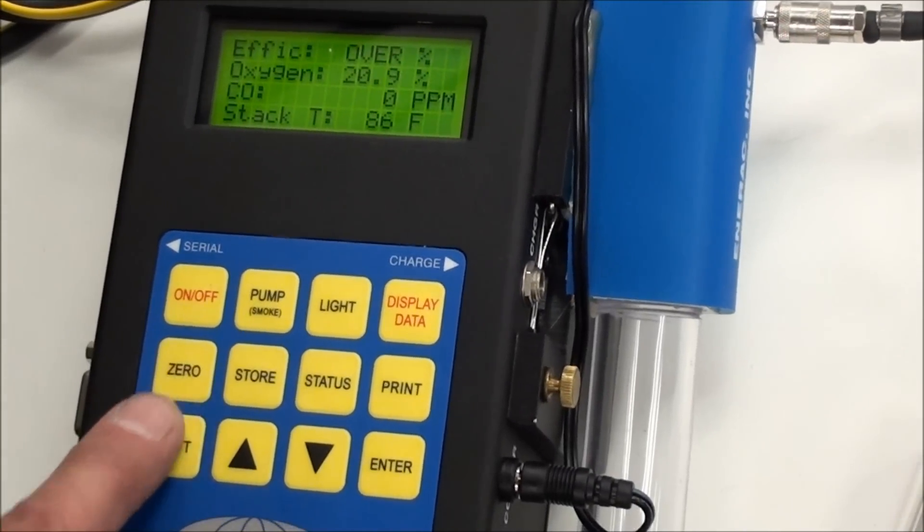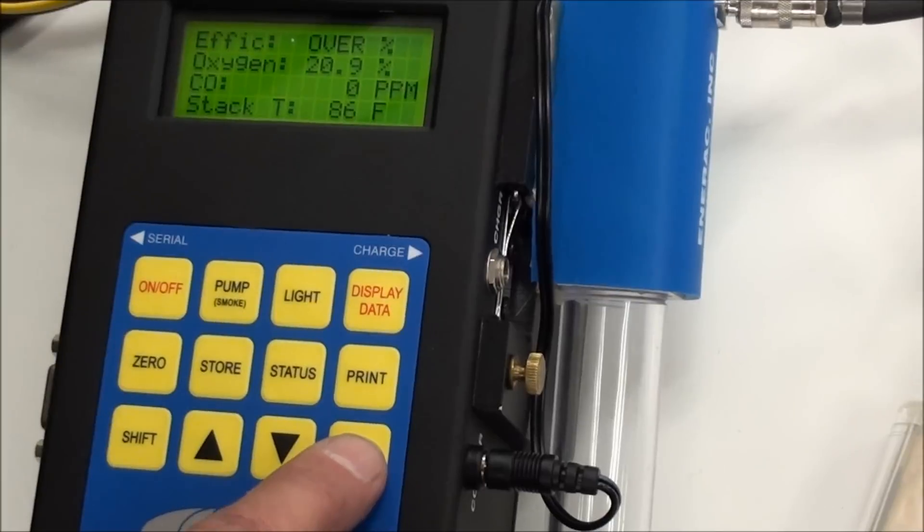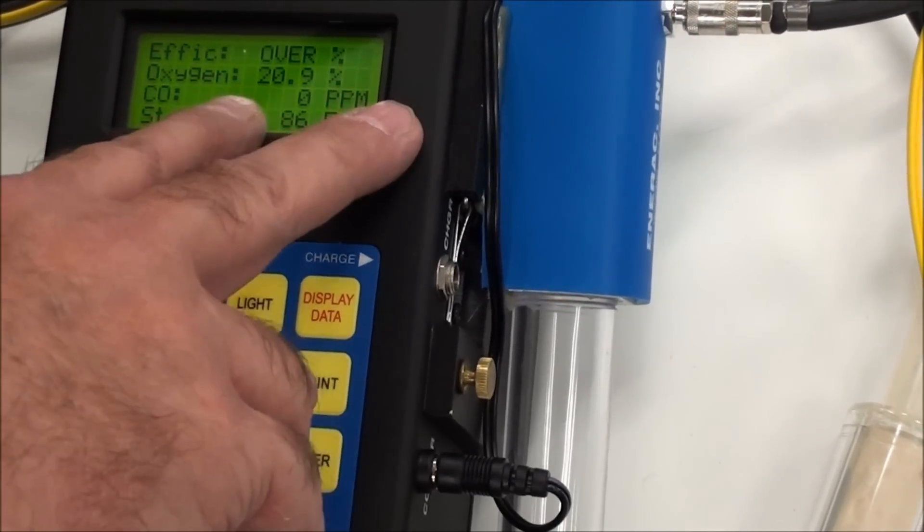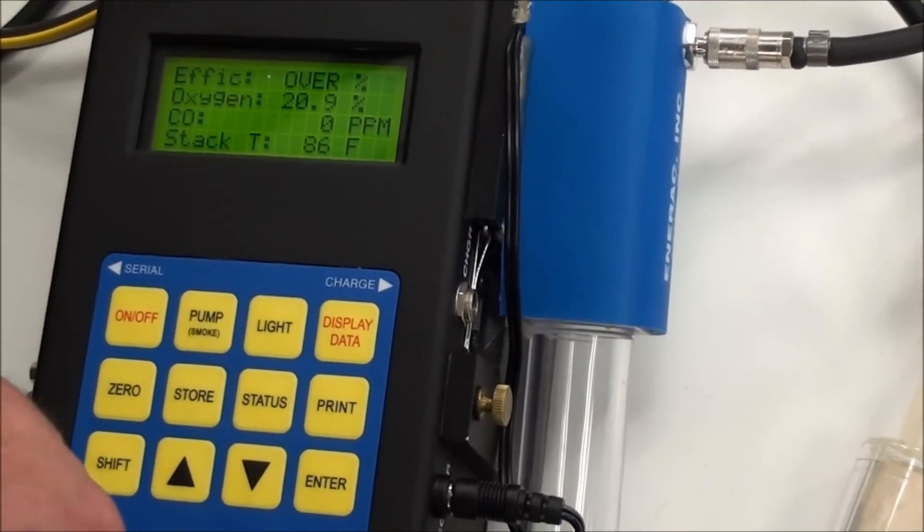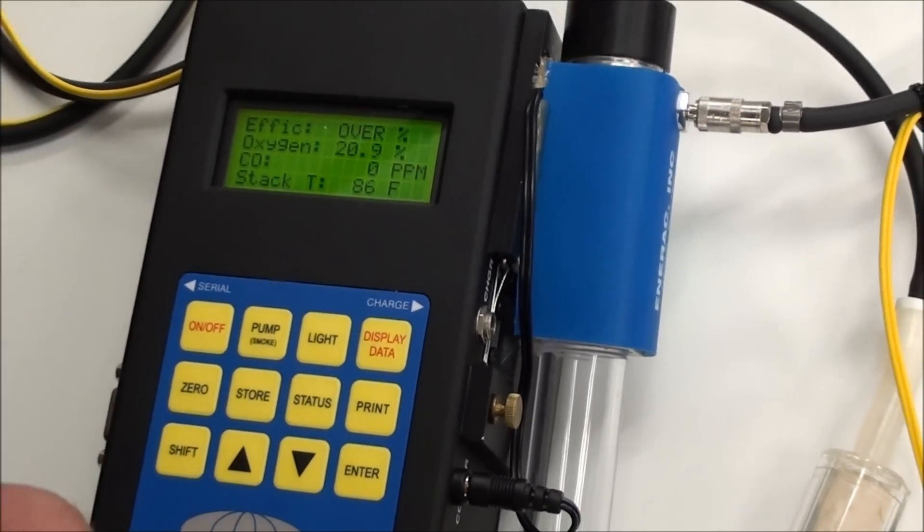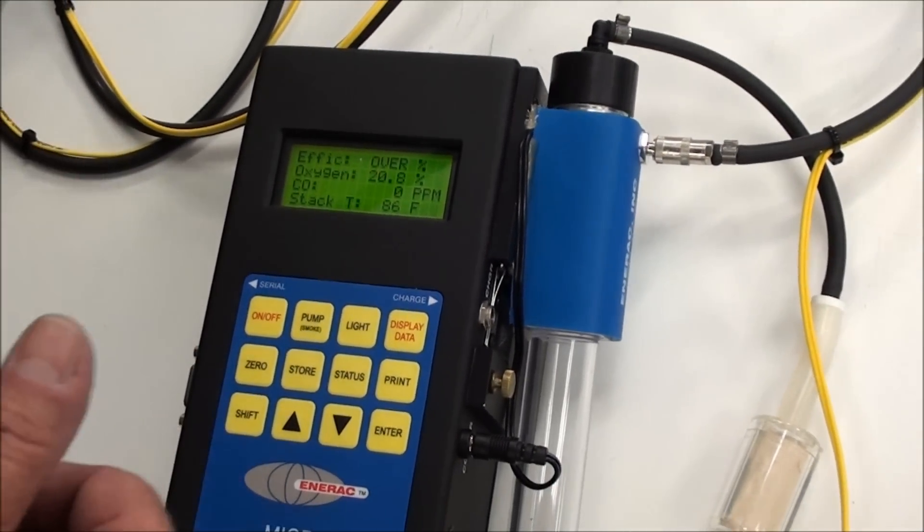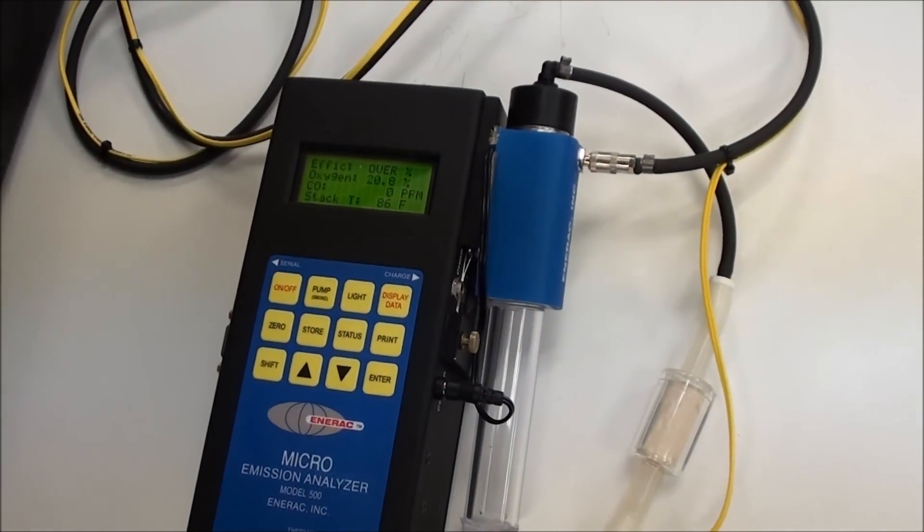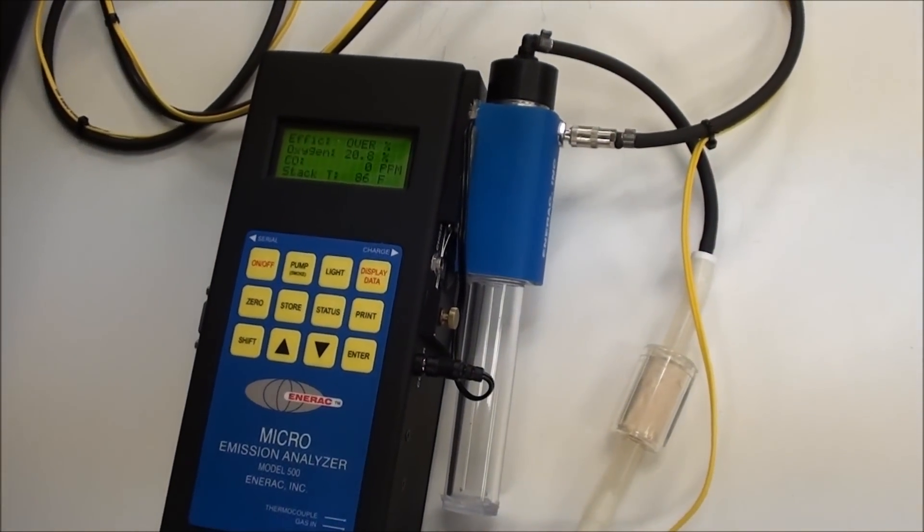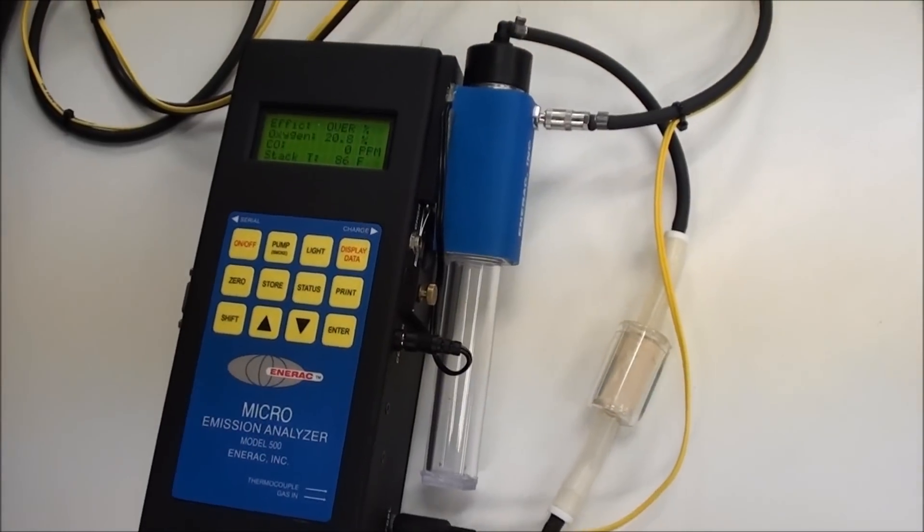You run the auto zero by pressing the zero and then enter, and you will see a countdown. It will count down from either 120 seconds or 180 seconds down to zero. At the end, it will zero all the sensors. Oxygen will read 20.8, 20.9. All the other sensors should read zero.